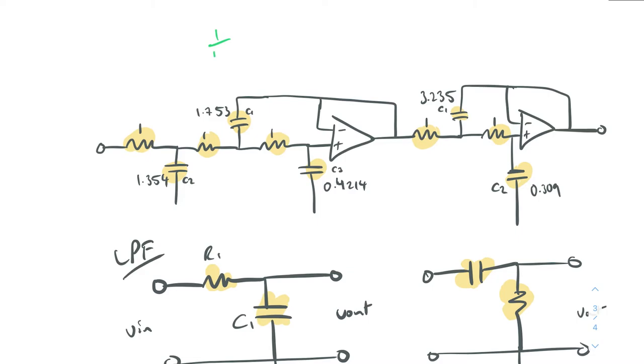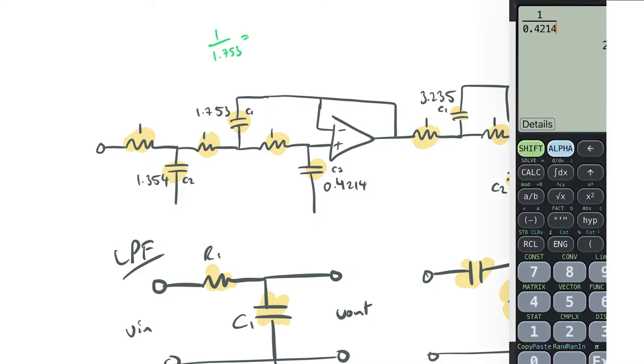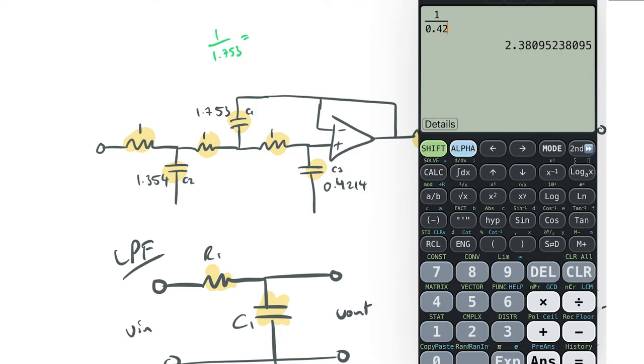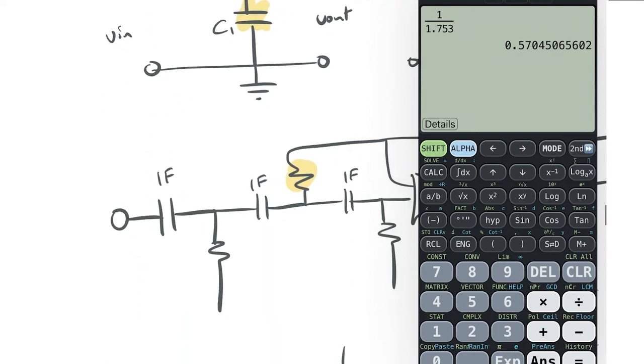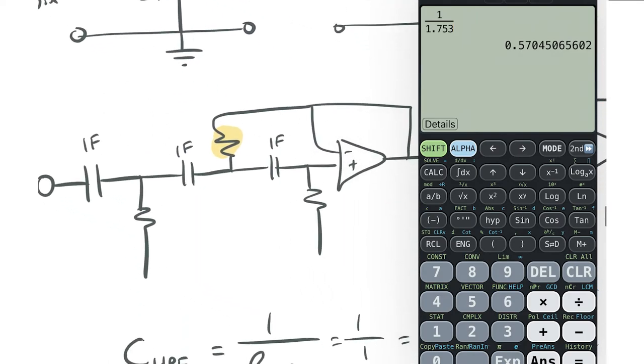So our value here is going to be one over 1.753, which is going to be equal to, let's get a calculator. Here we go. 1 over 1.753. That gives us 0.57. So we can come over here and say that our resistance here is going to be 0.57 ohms.